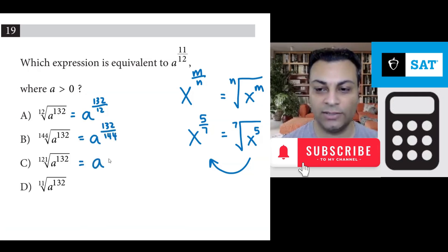This one can be written as a to the 132 over 121. And this one can be written as a to the power of 132 over 11.